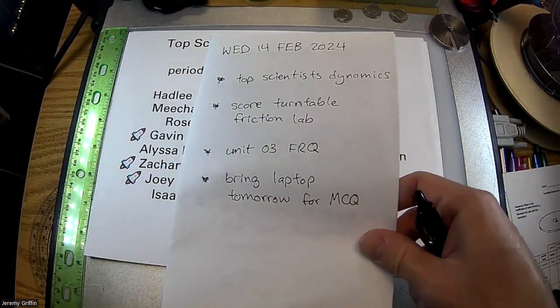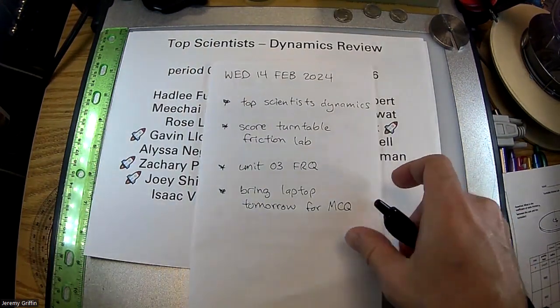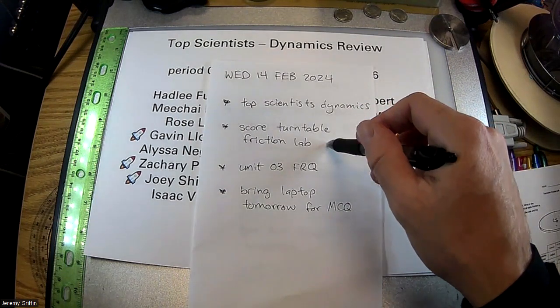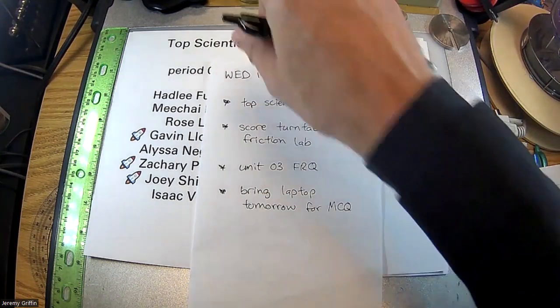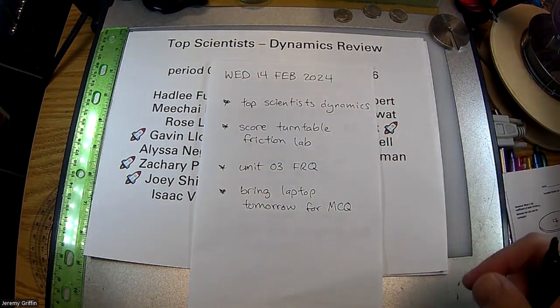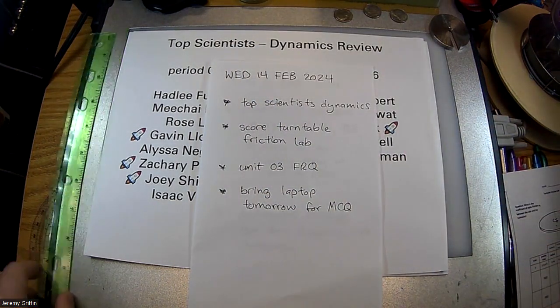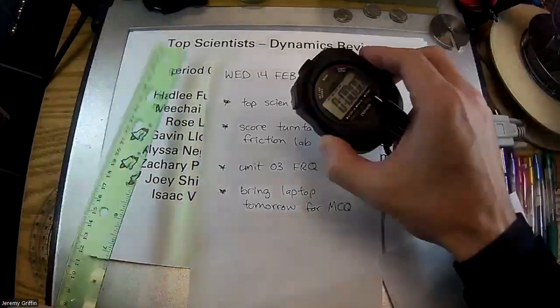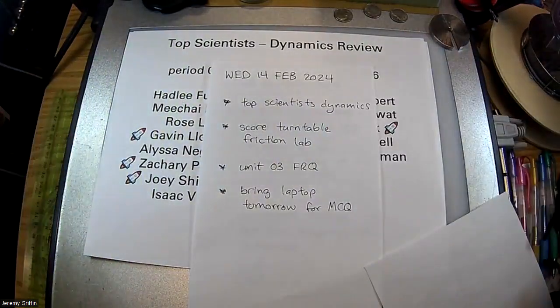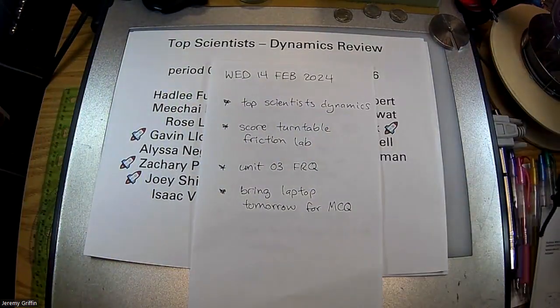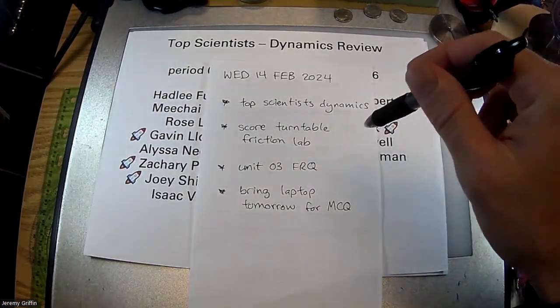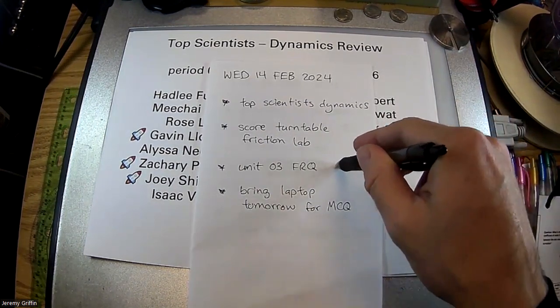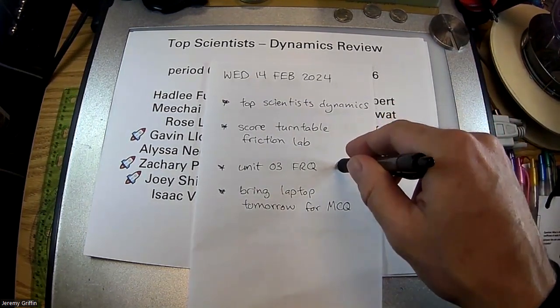So yesterday you guys did a turntable friction lab. Gave you guys some turntables, some lab weights. You had to figure out what was the coefficient of friction between those surfaces by spinning it. And your tools were ruler and a stopwatch. So you guys have that out. We're going to do AP score. You guys got colored pencils on your desk. Then I have some other FRQs lined up here. I'll give you guys after that.